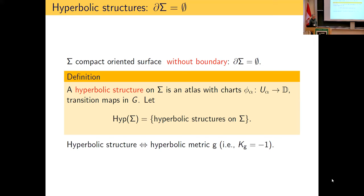A hyperbolic structure is actually equivalent to prescribing a hyperbolic metric on the surface, i.e., a metric with Gauss curvature equal to −1. In one direction that's obvious: if you have the atlas with charts taking values in the Poincaré disk, just pull back the metric — the transition functions are isometries so they patch together, giving you a metric of Gauss curvature −1. The converse is not entirely obvious but is true.